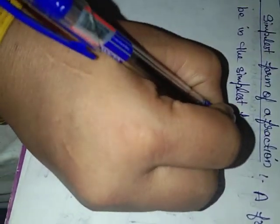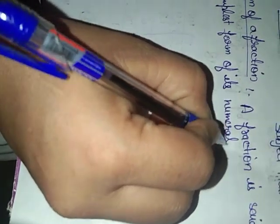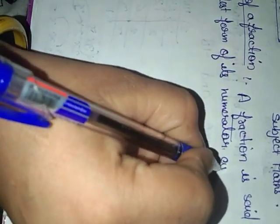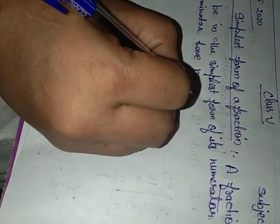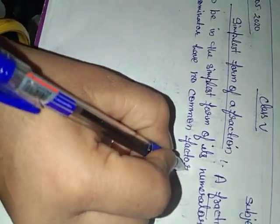A fraction is said to be in the simplest form if its numerator and denominator have no common factor except one.